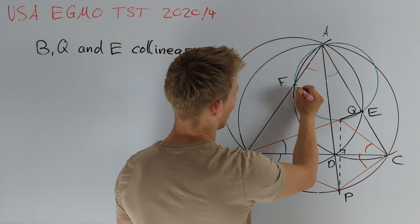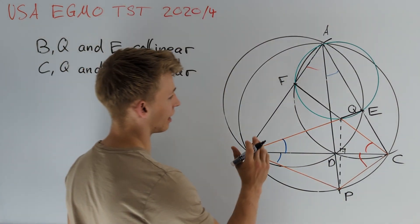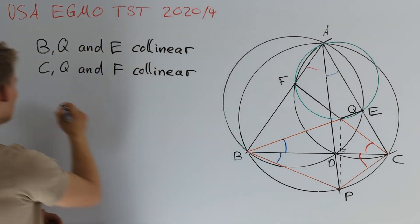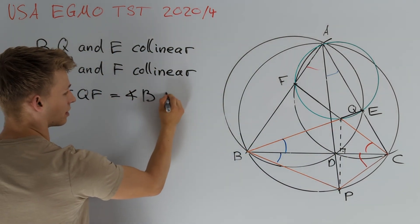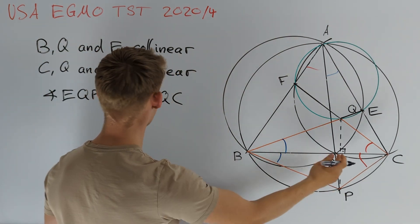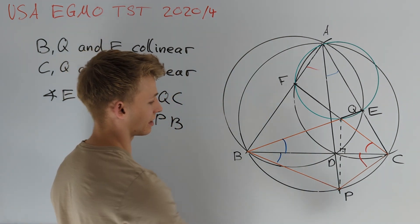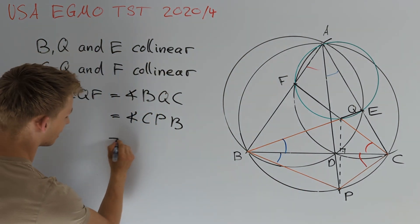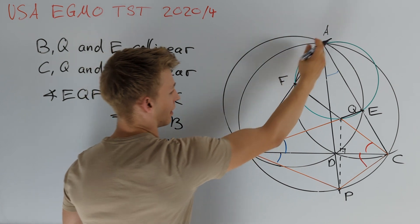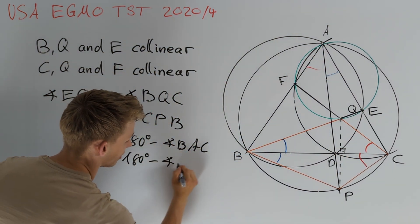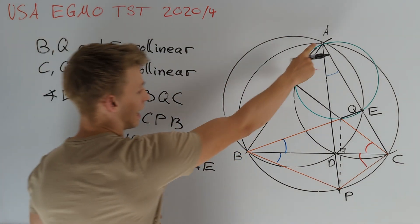In the same way we get that angle FAD equals the red angle QCB, and therefore the points C, Q and F are collinear. Now we have figured out enough to say something about angle EQF. Namely, angle EQF equals angle BQC. Since Q is the reflection of P about line BC, this equals angle CPB. Using the fact that P lies on the circumcircle of triangle ABC, this equals 180 degrees minus angle BAC, which is nothing but angle FAE. So angle EQF equals 180 degrees minus angle FAE, which tells us that Q lies on the circumcircle of triangle AFE.